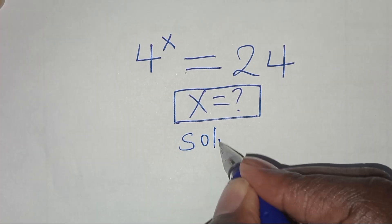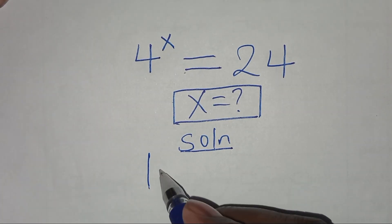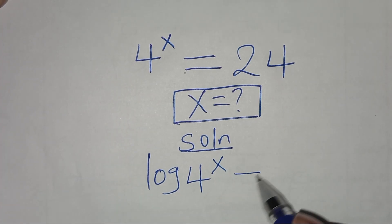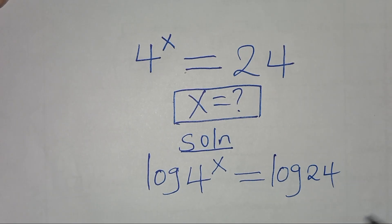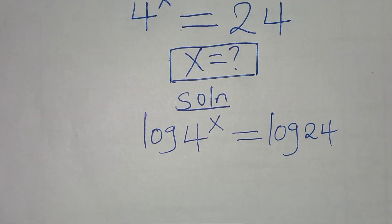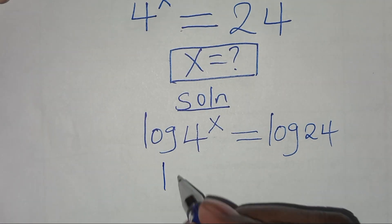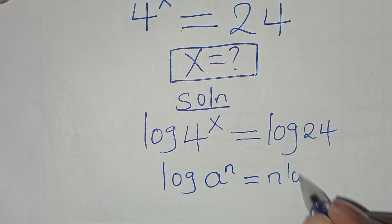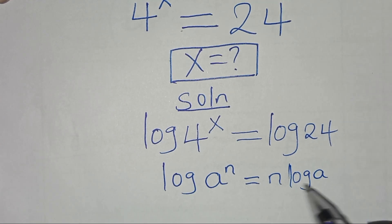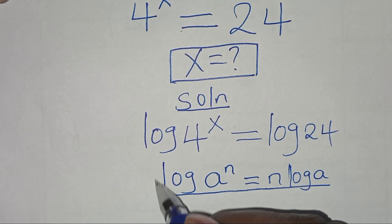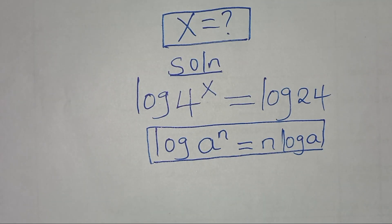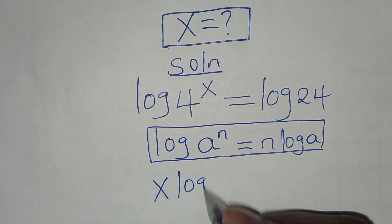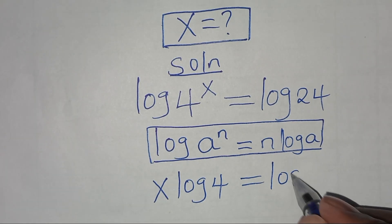For the solution here, we introduce logarithm on both sides so that we have log of 4 to the power x, this is equal to log 24. Now, log 4 to the power x is in the form of log a to the power n, which we can express as n·log a. Applying this power rule property of logarithm, then log 4 to the power x can be expressed as x·log 4, equal to log 24.